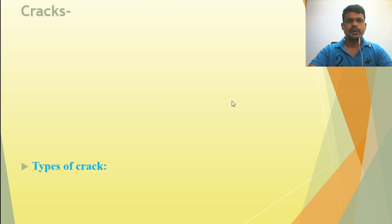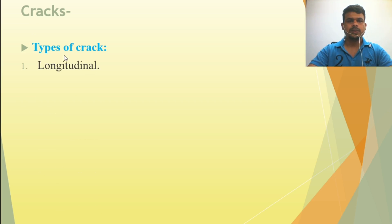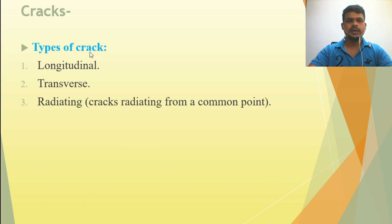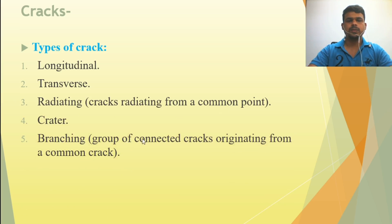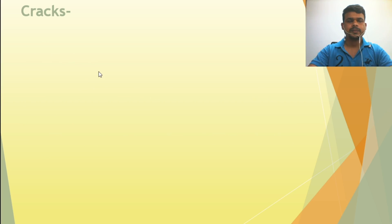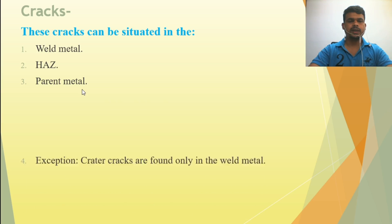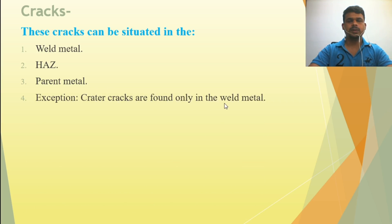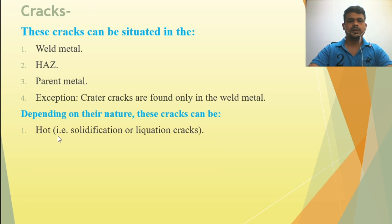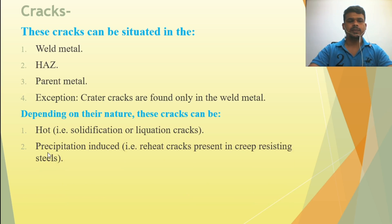Types of cracks include: longitudinal cracks, transverse cracks, radiating cracks from a common point, crater cracks, and branching — a group of connected cracks emanating from a common crack. These cracks can be situated in the weld metal, heat-affected zone, or parent metal. Exception: crater cracks are found only in the weld metal. By nature, cracks can be hot cracks (solidification or liquidation), precipitation-induced reheat cracks present in creep-resistant steels, or cold cracks (hydrogen-induced).